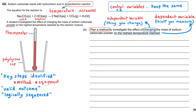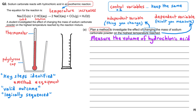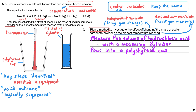The first thing you would do is measure the volume of hydrochloric acid using a measuring cylinder to get an accurate volume, and then pour this acid into the polystyrene cup where the chemical reaction is going to take place.